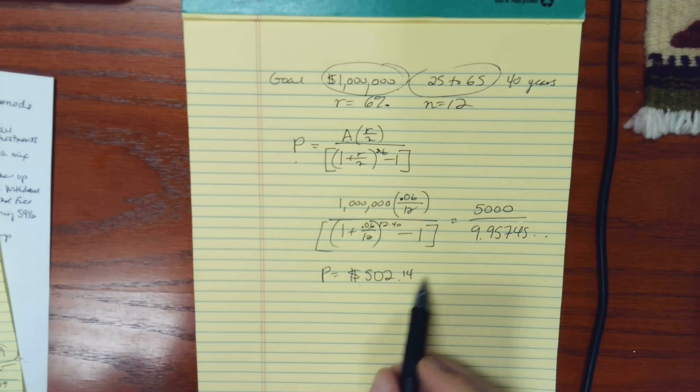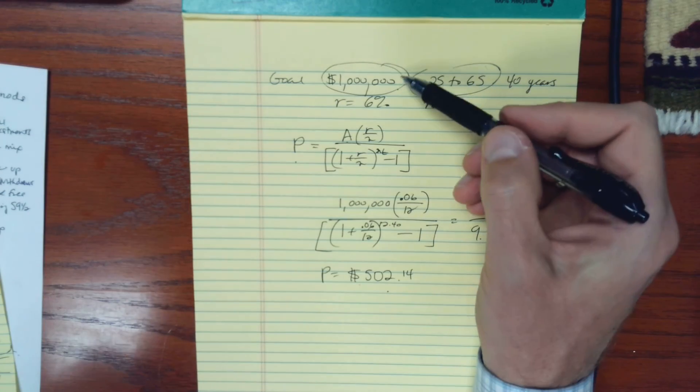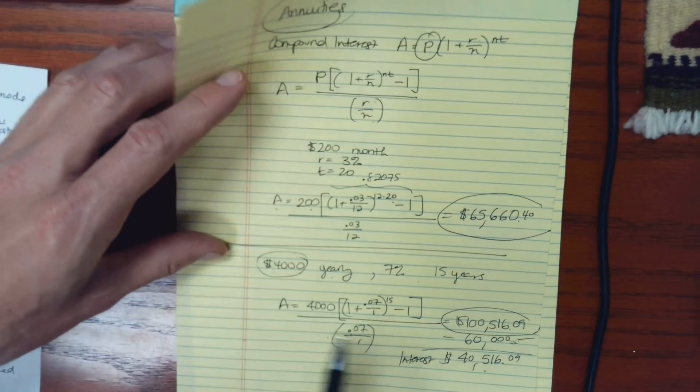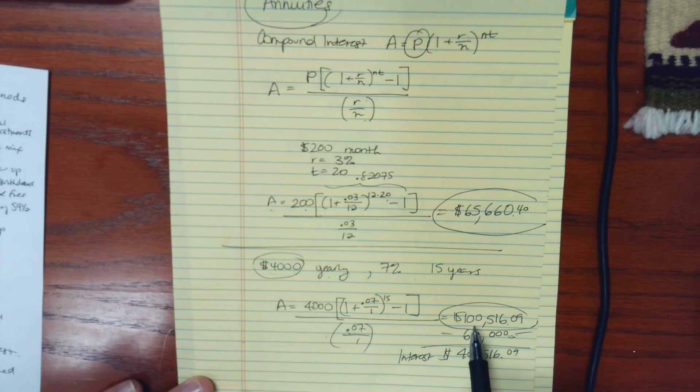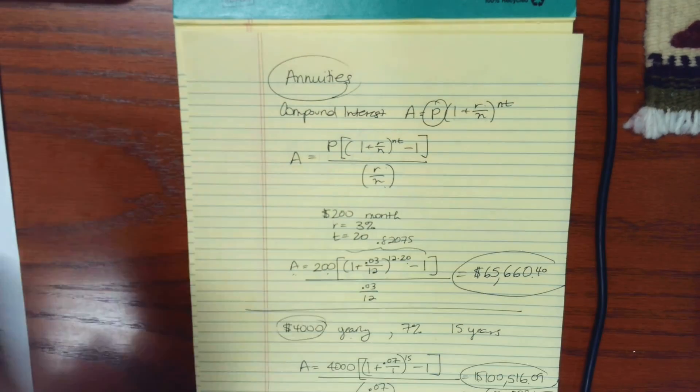And so in this case, we found out that that was $500 monthly in order to get a million dollars. And if we set aside $4,000 yearly, in 15 years we can have $100,000. All righty. I hope that helps with your understanding of annuities, and I'll see you next time.